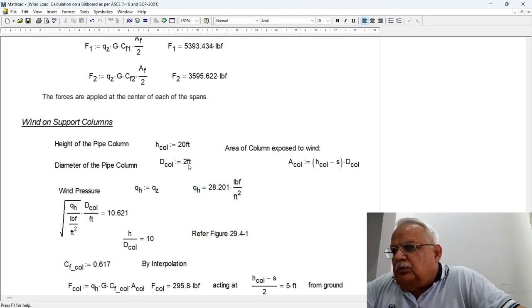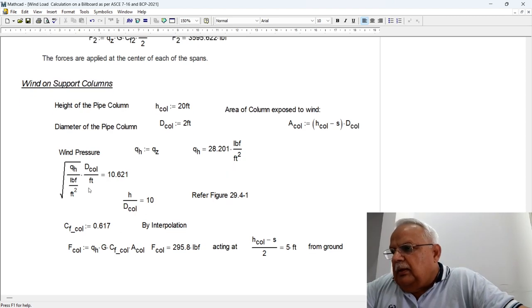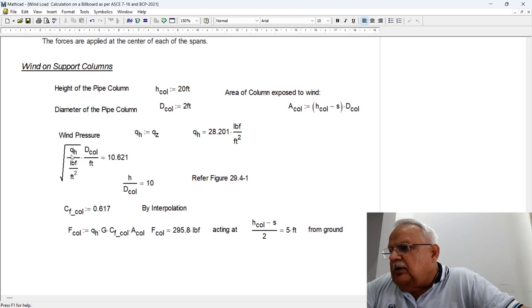Wind on the support column: as per the assumption, overall height of the billboard is 20 feet, diameter of the column is 2 feet, so the area of the column exposed to wind will be equals to H column minus S multiplied by the diameter of the column.